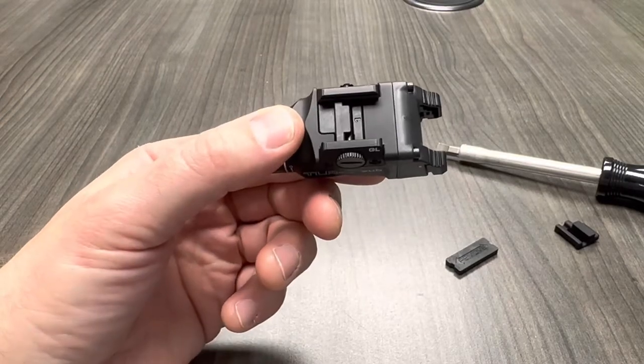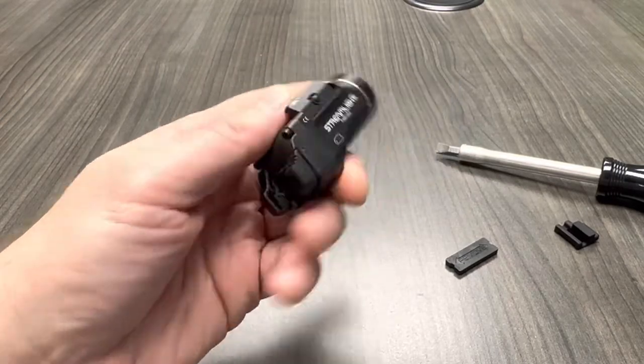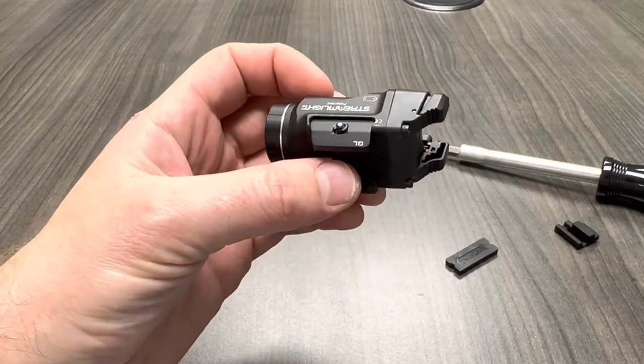Here's how to remove and replace the key on a TLR7 sub. I'm demoing it on the Glock version of the light. The procedure is the same for all versions.